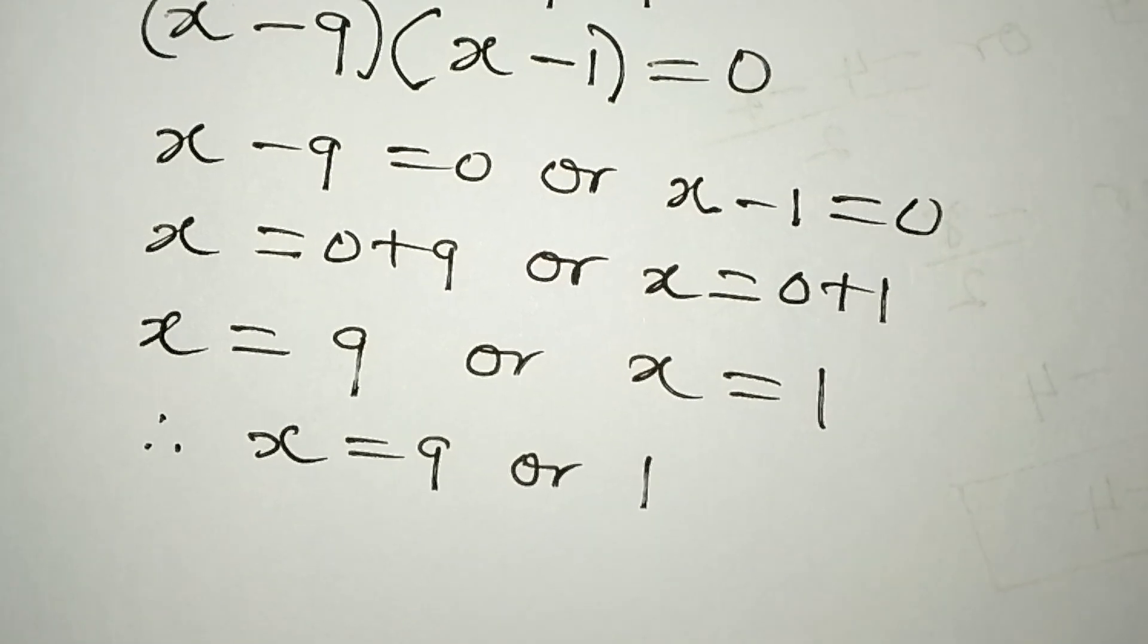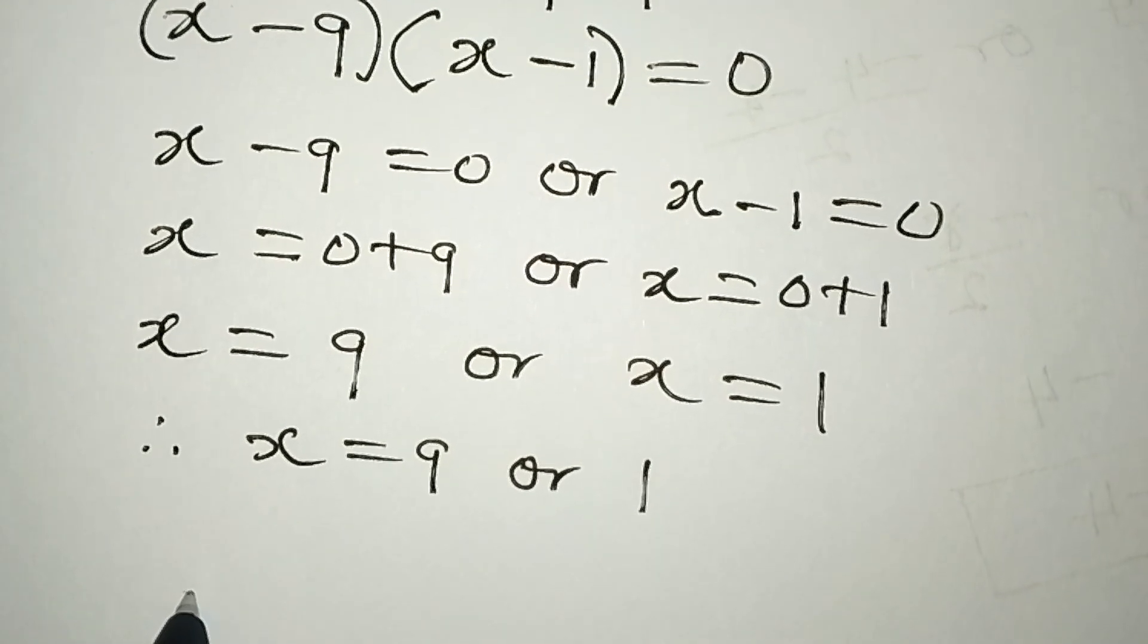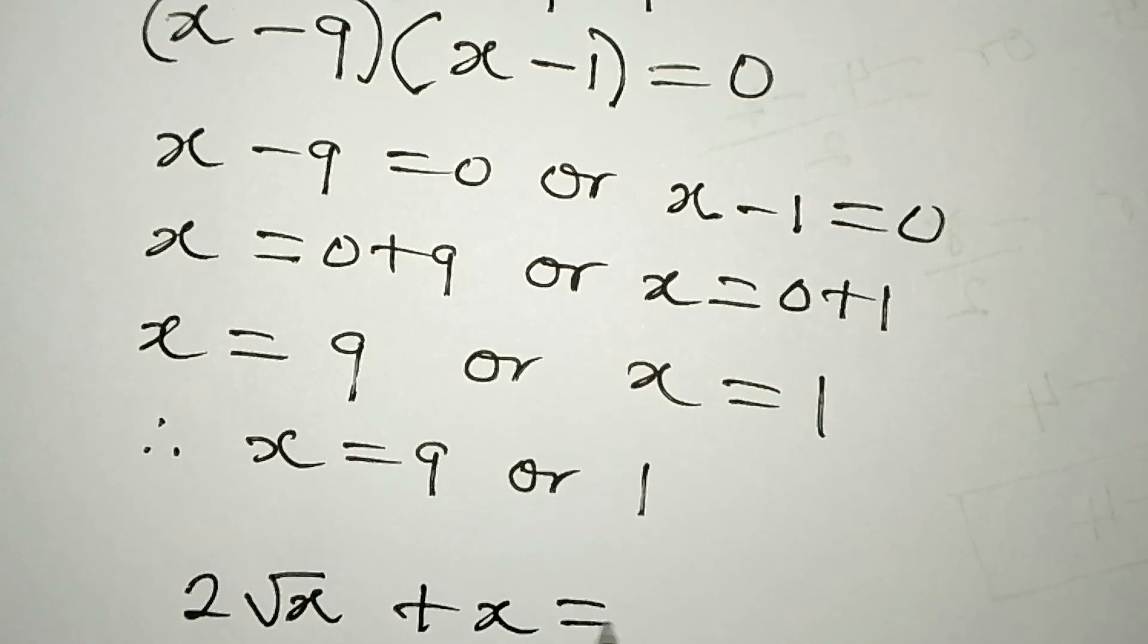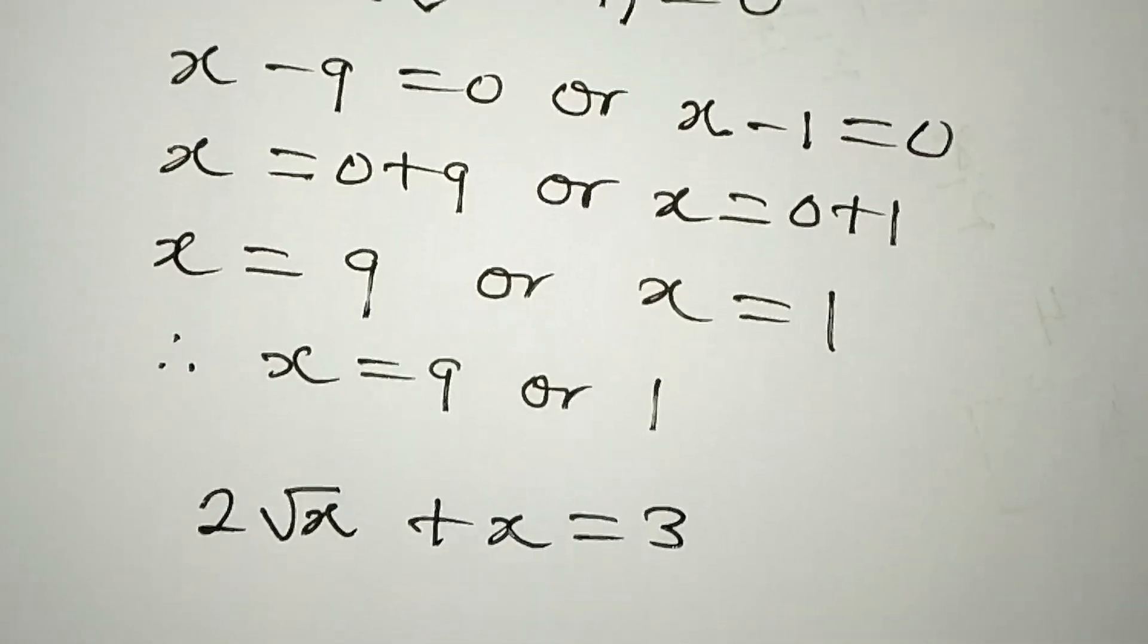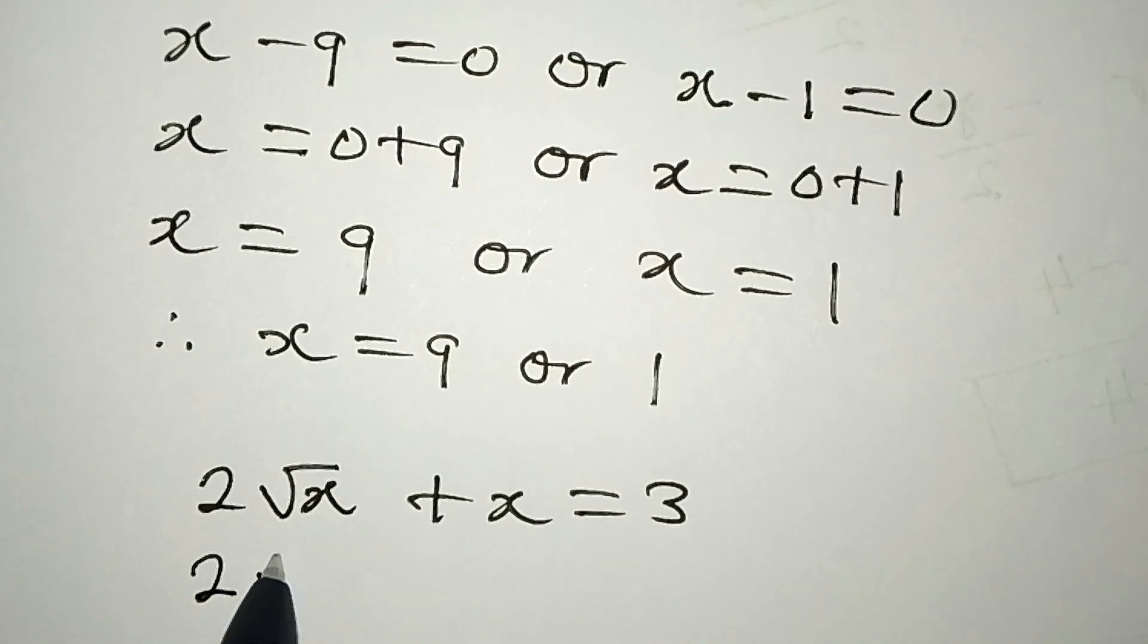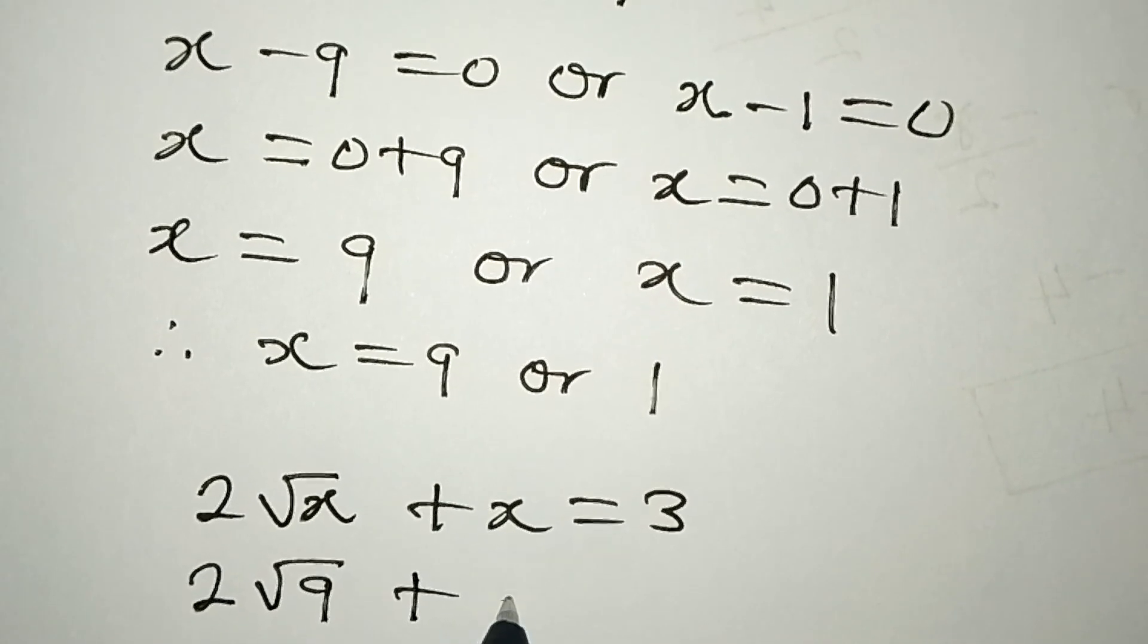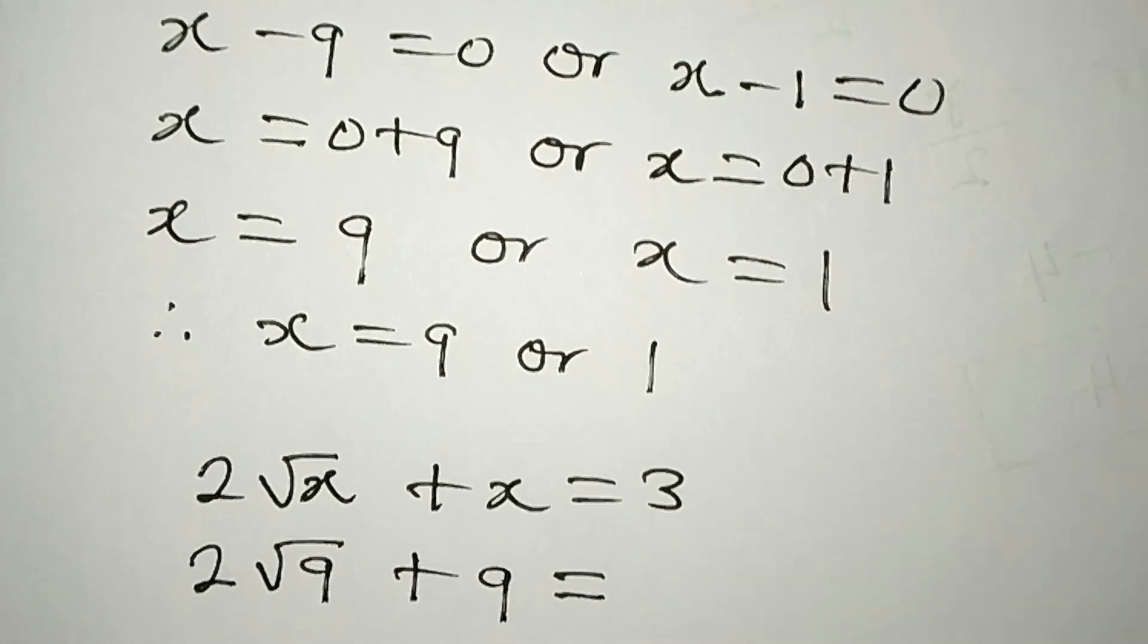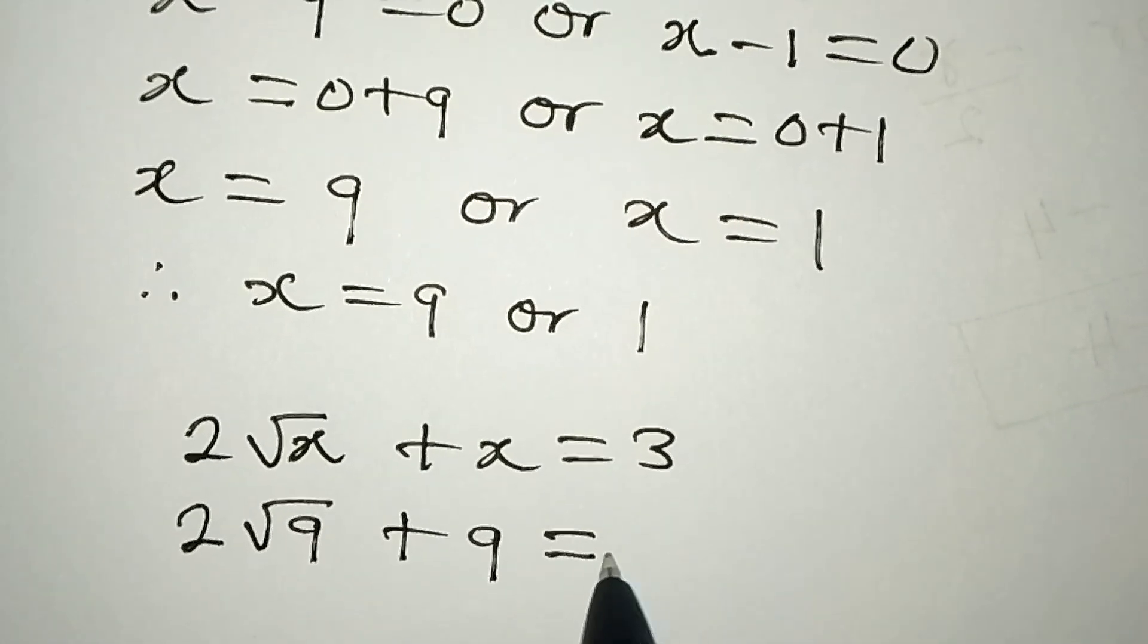test these two values in the original equation 2√x + x = 3. If we put in 9 first, we have 2√9 + 9, which is already more than 3.